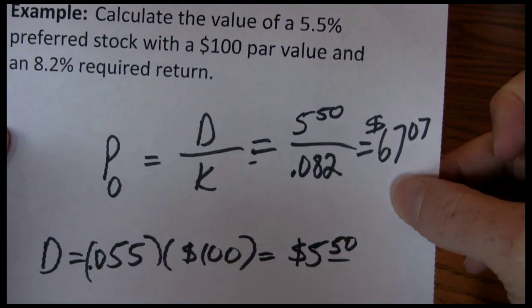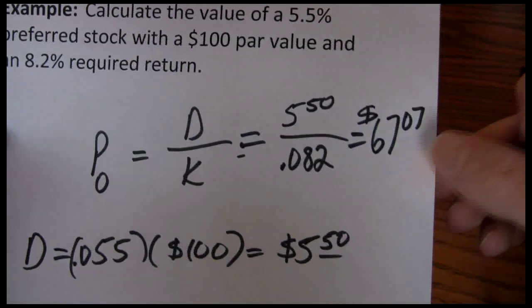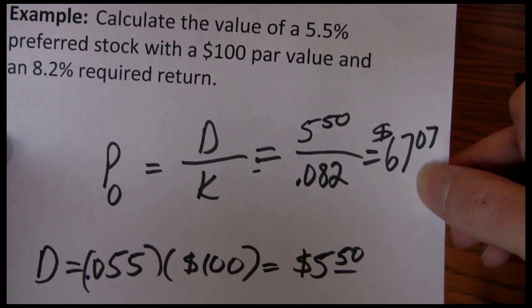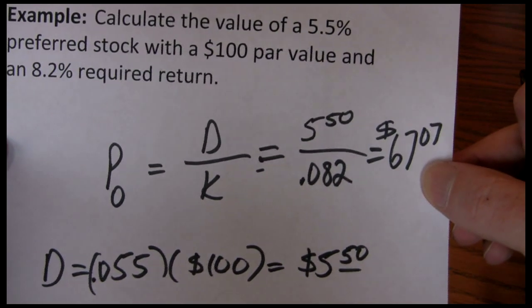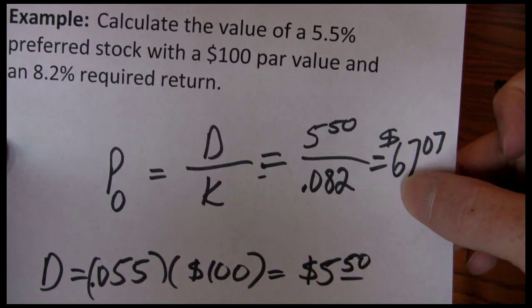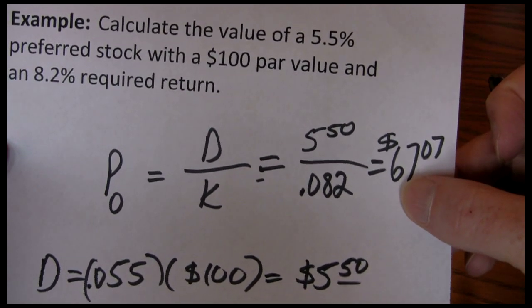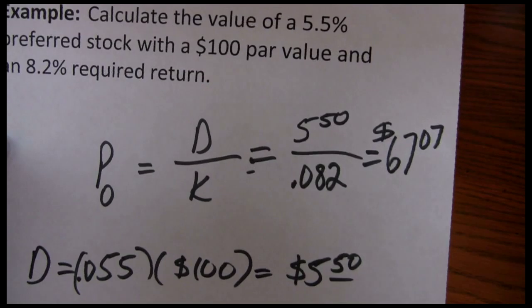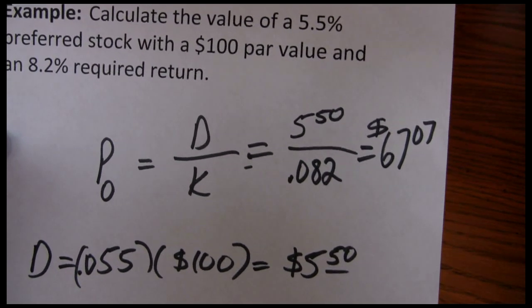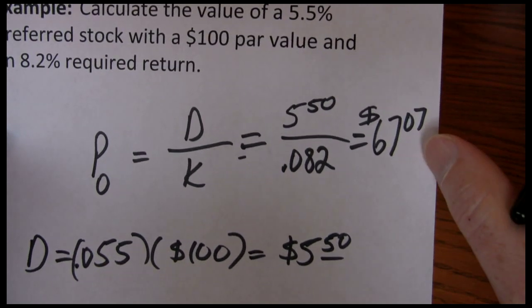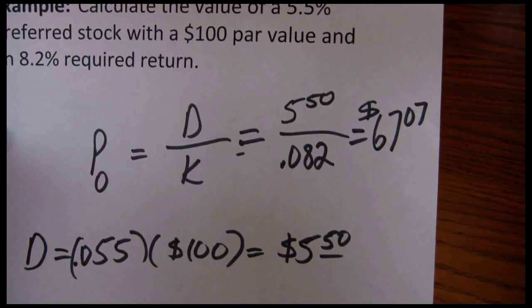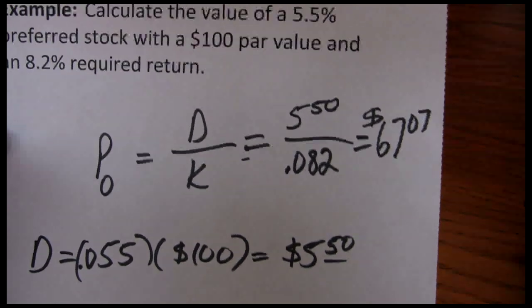If we were an investor looking to purchase this stock and we contacted our broker and the broker said it'll cost $65 per share, we'd say that's worthwhile — it's worth $67, we can buy it for $65, so we'd want to make that investment. If we call our broker and he says the current price is $72 per share, we're not interested because it's only worth $67.07 based on our analysis. We don't want to pay more than $67.07 for that stock.